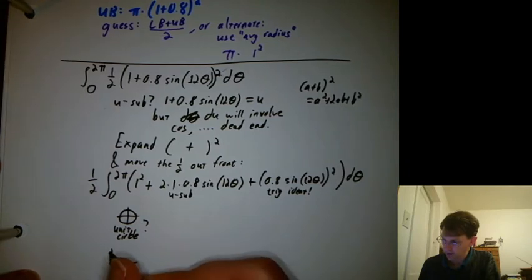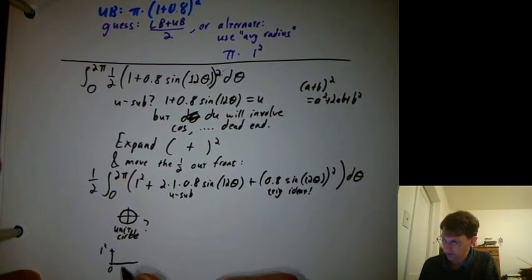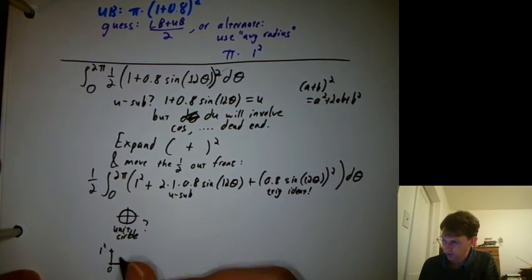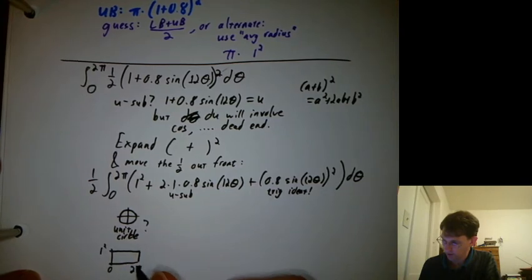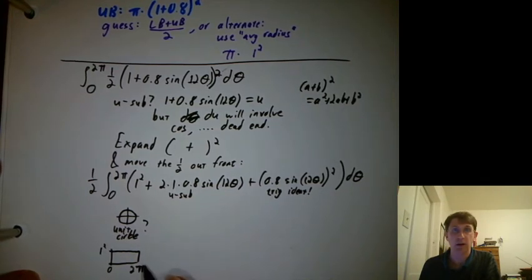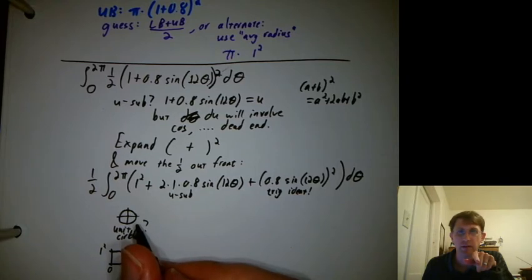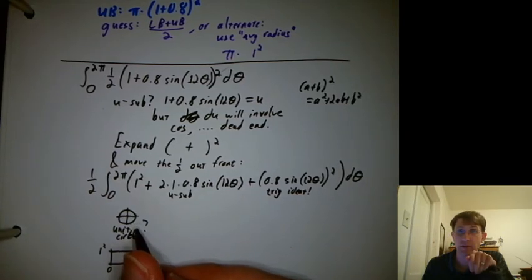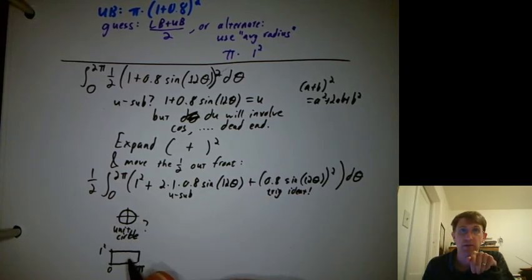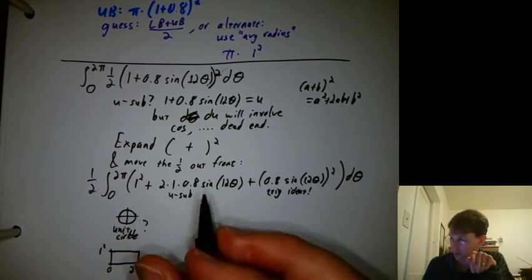So you could say this is a height of 1 squared, a constant height of 1 squared from 0 to 2 pi. And you would get what? 2 pi times 1, which is, is that the area of the unit circle? No, that's twice the area of the unit circle. So really this approach is better. It's not the unit circle.